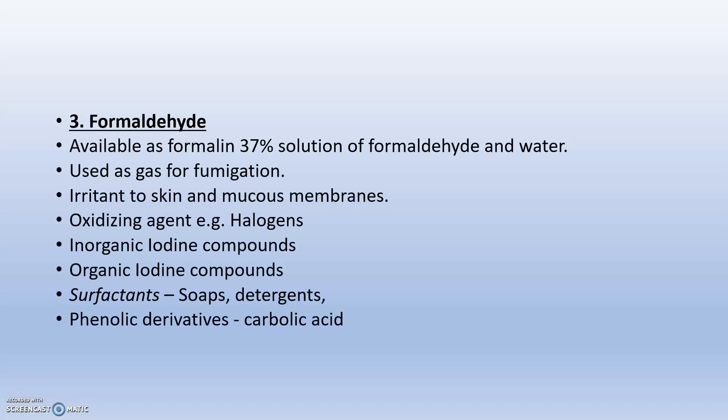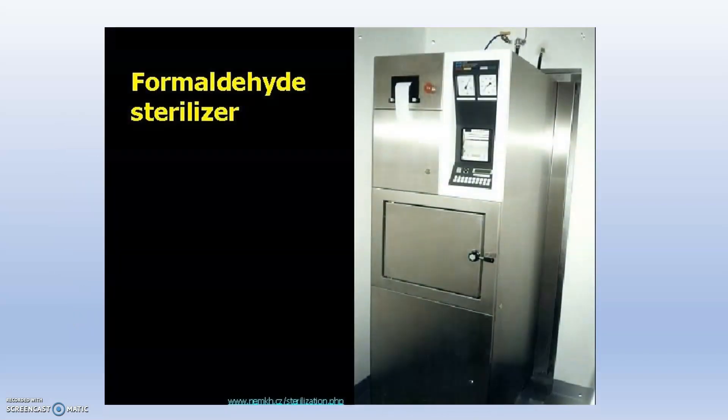Formaldehyde is mainly used as formalin 37%, used as a gas for fumigation. Oxidizing agents and halogens are also used. Surfactants such as soaps and detergents are used. Phenolic derivatives include carbonic acid, mainly used in phenol labs. This is a formaldehyde sterilizer.